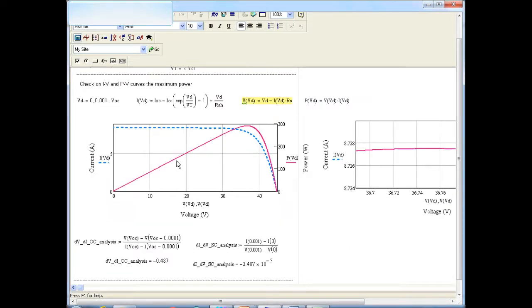Then the resulting IV and the power voltage PV curves at the STC are shown here. So the dotted blue is the IV curve and the red is the P versus V curve with the scales on the right hand side 0 to 300.